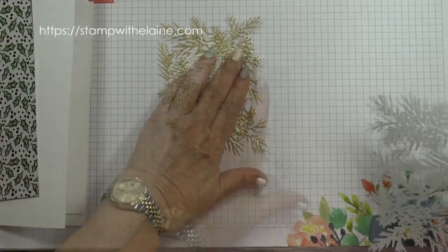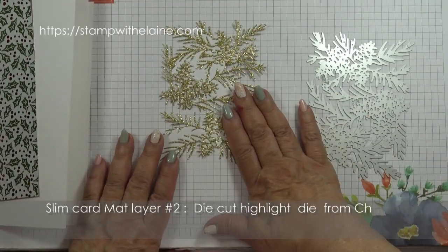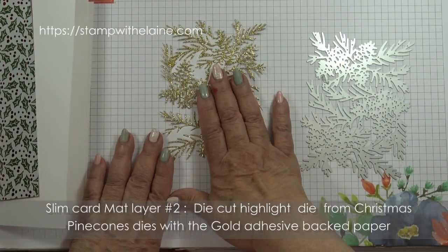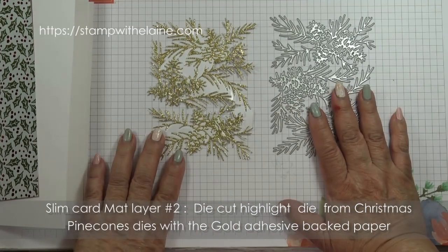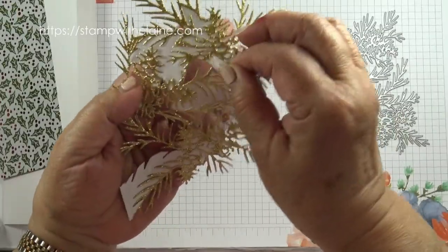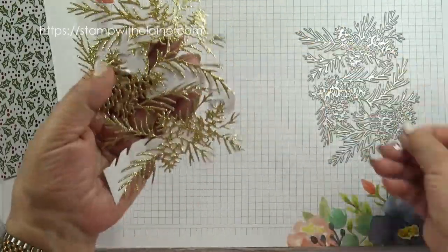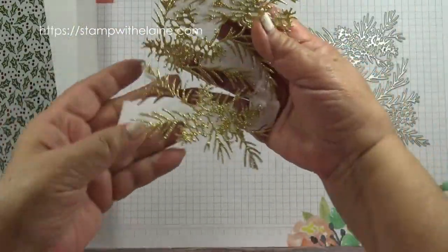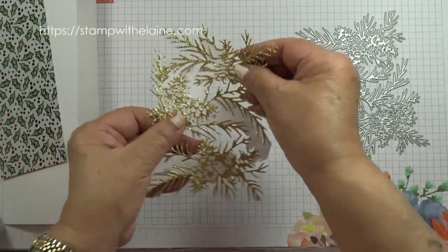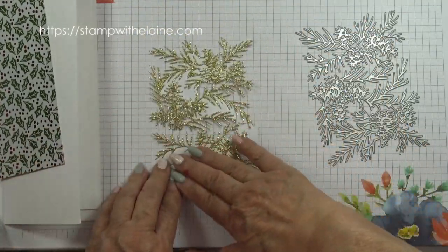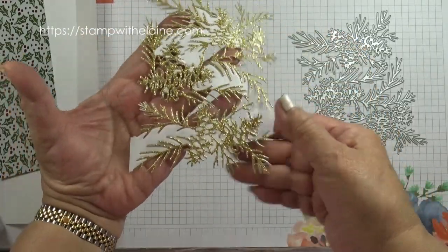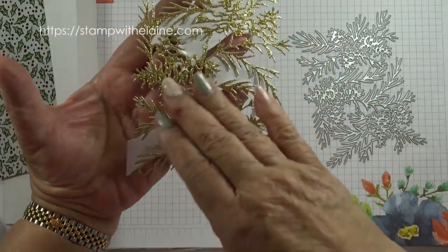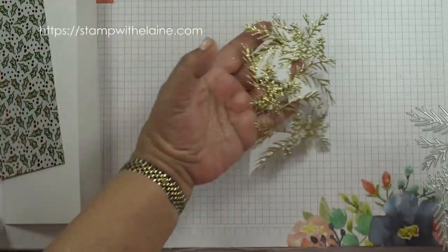For the embellishment, I've cut this from the silver and gold adhesive back glimmer paper with the Christmas pine cone dies. The advantage of having the adhesive back glitter paper is that you can just take out all the bits and it's ready to go. You don't have to worry about applying adhesive on the back.